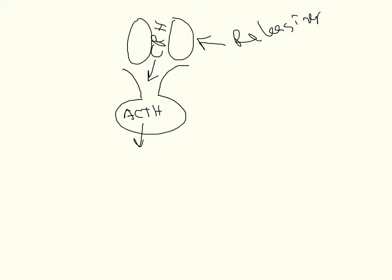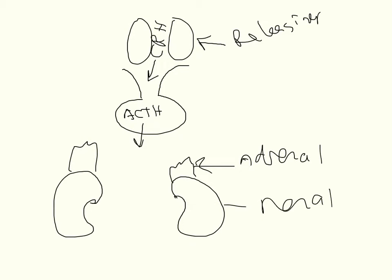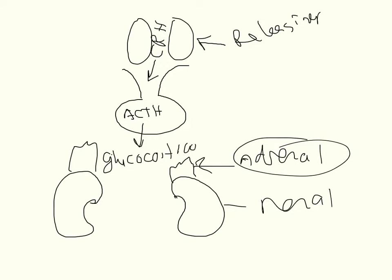ACTH is released in the body and it goes through the bloodstream. Here we have our kidney, and on top of our kidney we have our adrenal glands — we've got that on both sides. When ACTH stimulates the adrenal gland, you get two major products: the first is going to be glucocorticoids, and the second is androgens.